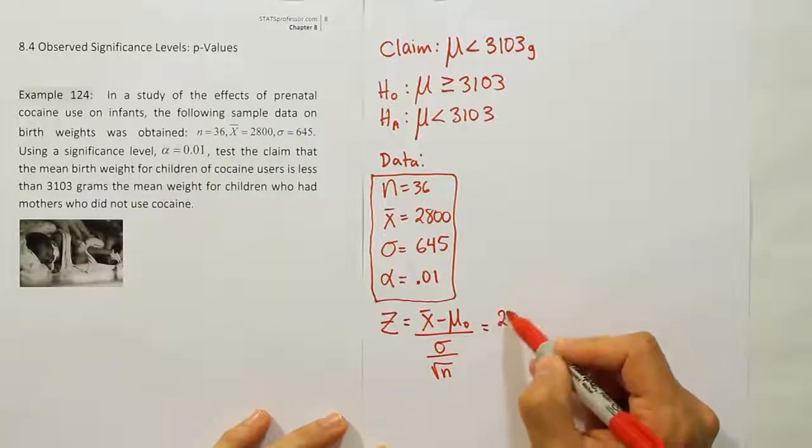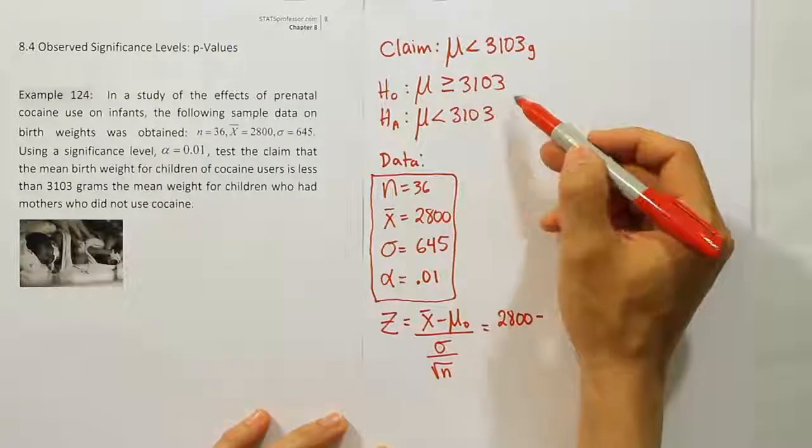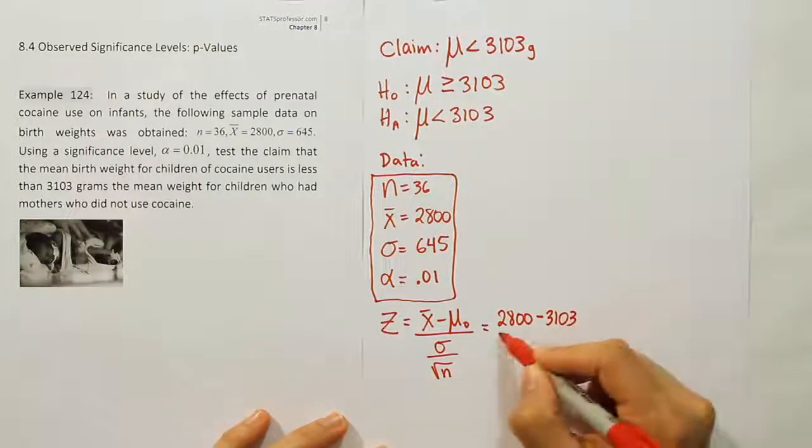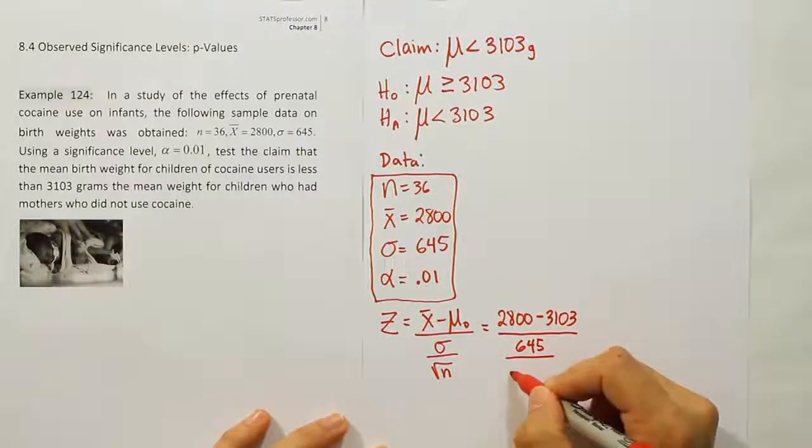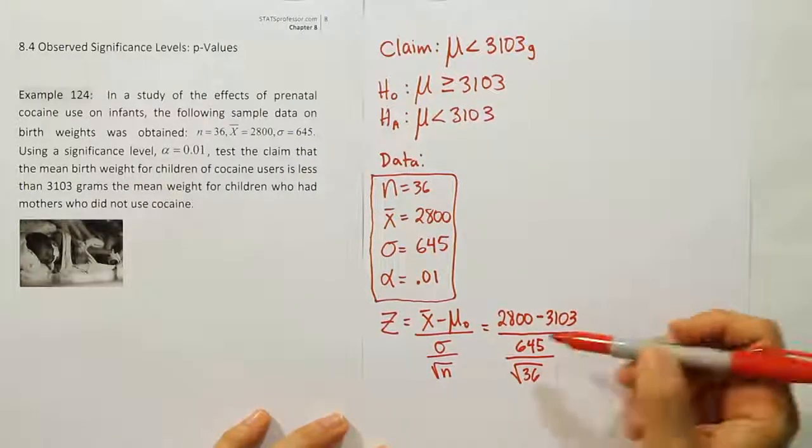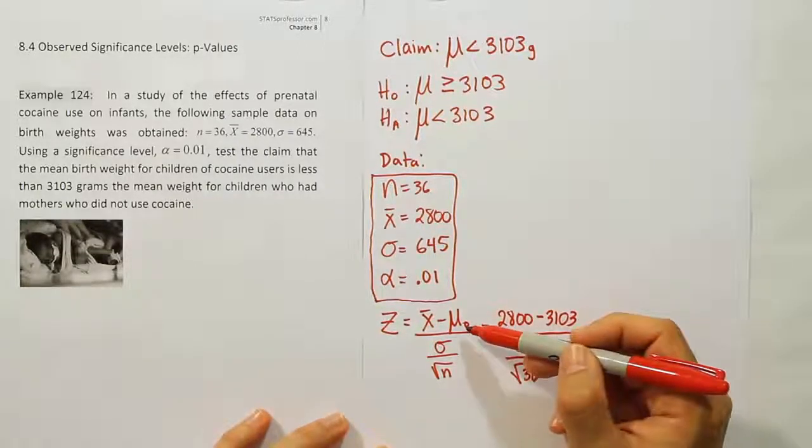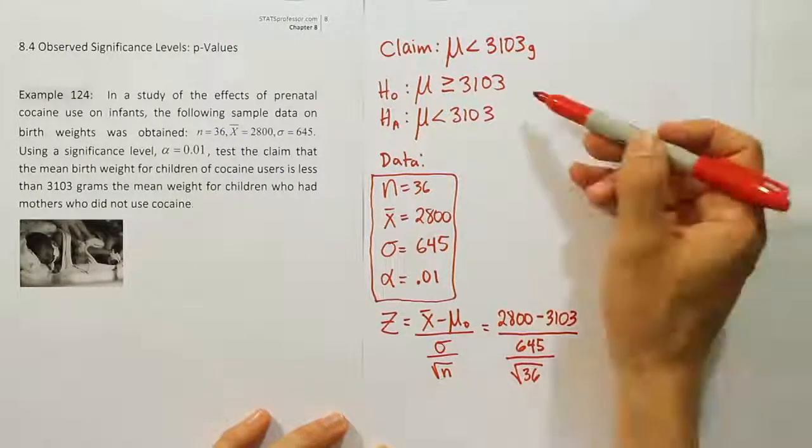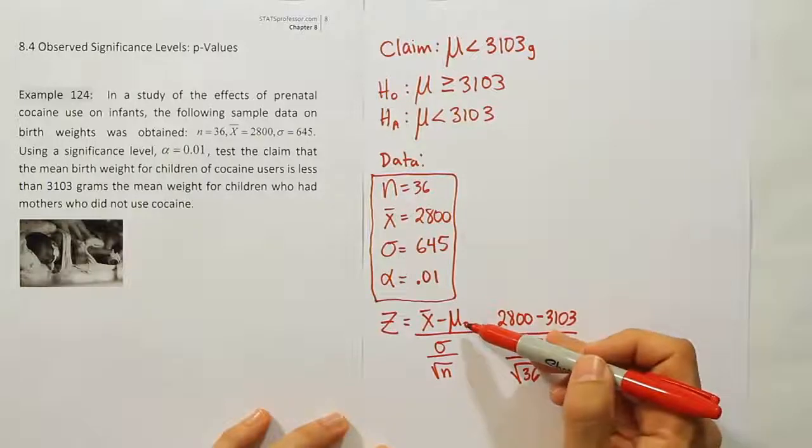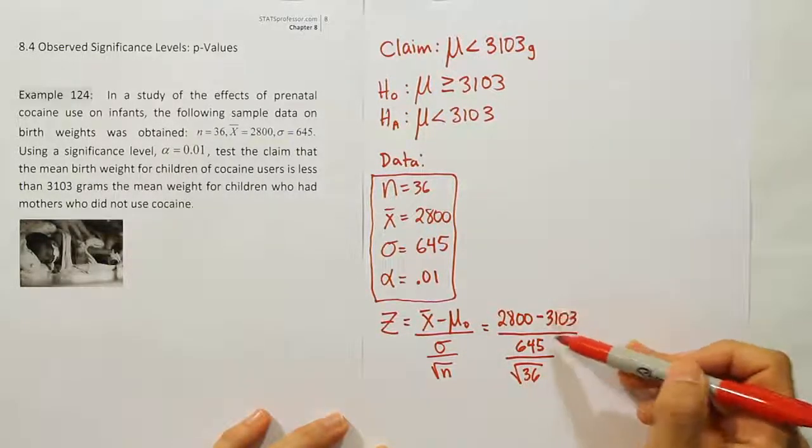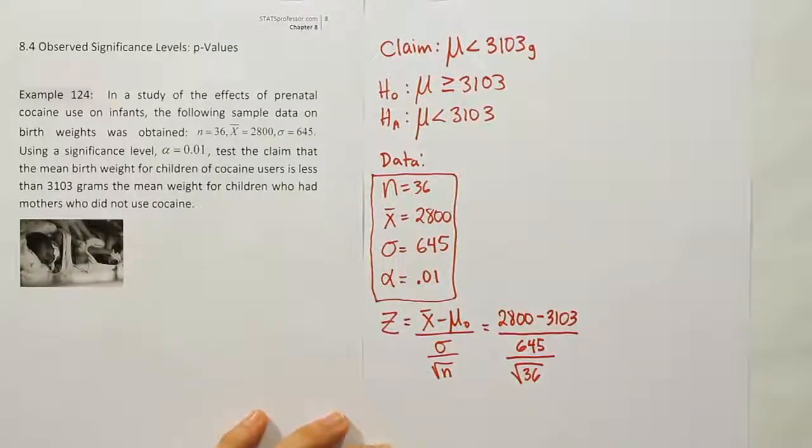Plugging those numbers in, we get 2,800 minus the value from the null hypothesis. That number is 3,103. The standard deviation is 645 divided by the square root of n, the square root of 36. By the way, we keep dragging this number from the null hypothesis. And the reason why that's the case is because, remember, in all hypothesis testing, we're always conducting the test on the null hypothesis. It doesn't really matter what the claim is. The null hypothesis is what we test. And that's why this number always comes from the null hypothesis.